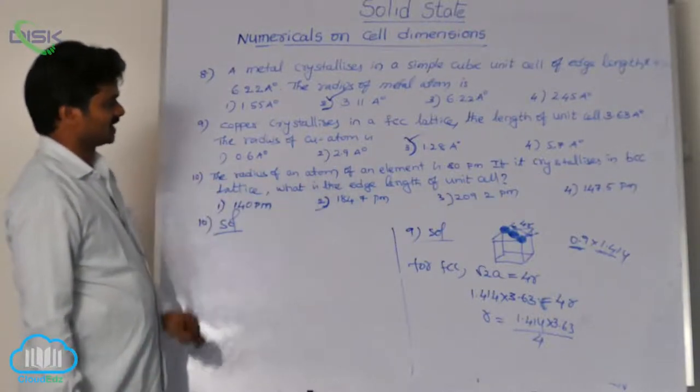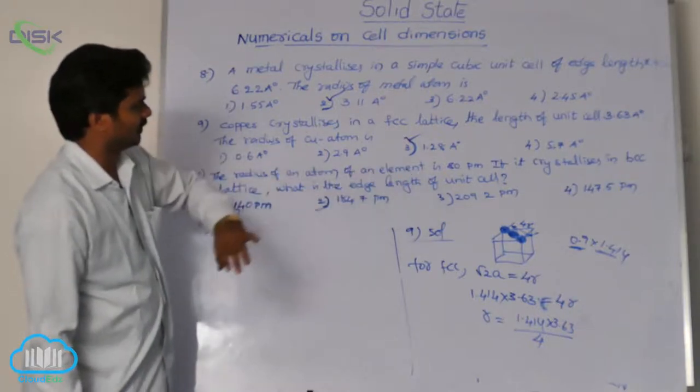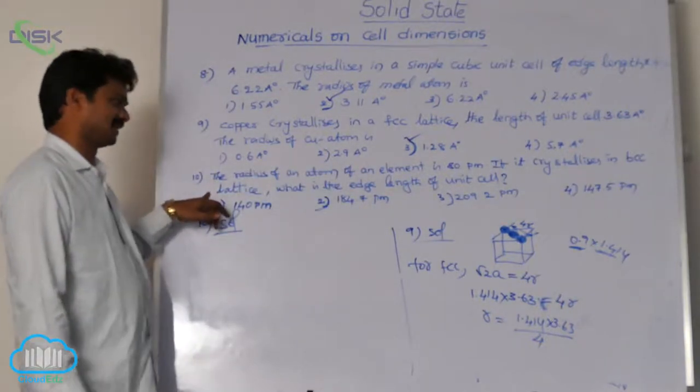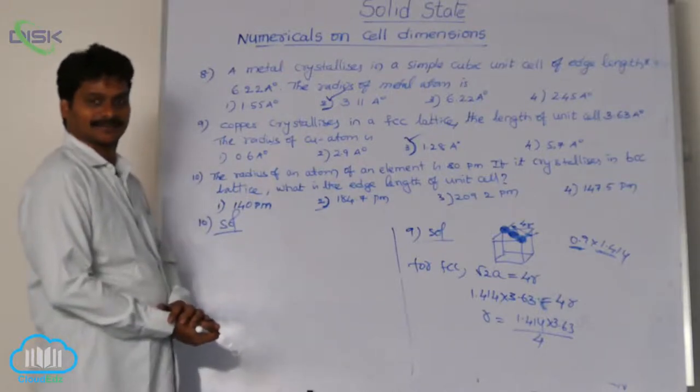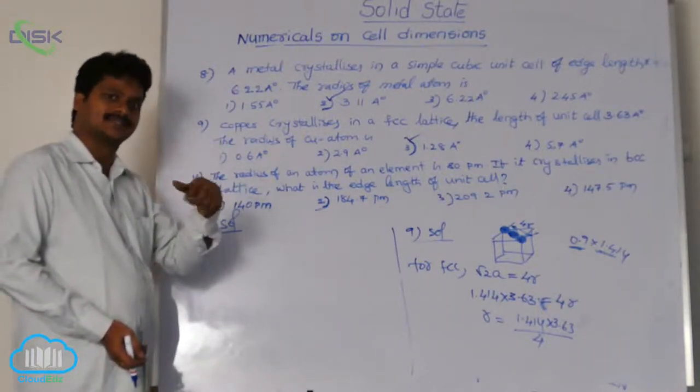The radius of an atom of an element is 80 picometers. If the element crystallizes in a BCC lattice, what is the edge length of the unit cell? In the previous cases, edge length was given and we calculated radius.